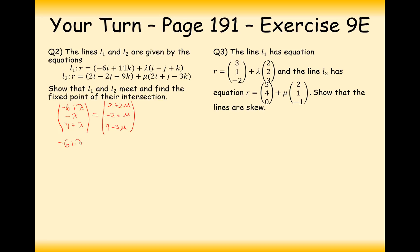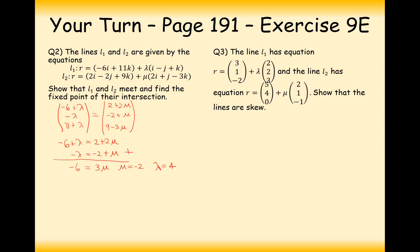Solve the simultaneous equations for x and y: minus 6 plus lambda equals 2 plus 2 mu, and minus lambda equals minus 2 plus mu. Adding the equations together nicely cancels terms to give minus 6 equals 3 mu, so mu equals minus 2. Then lambda equals 4. Checking with the second equation: minus 2 minus 2 is minus 4 equals minus lambda, so lambda equals 4.